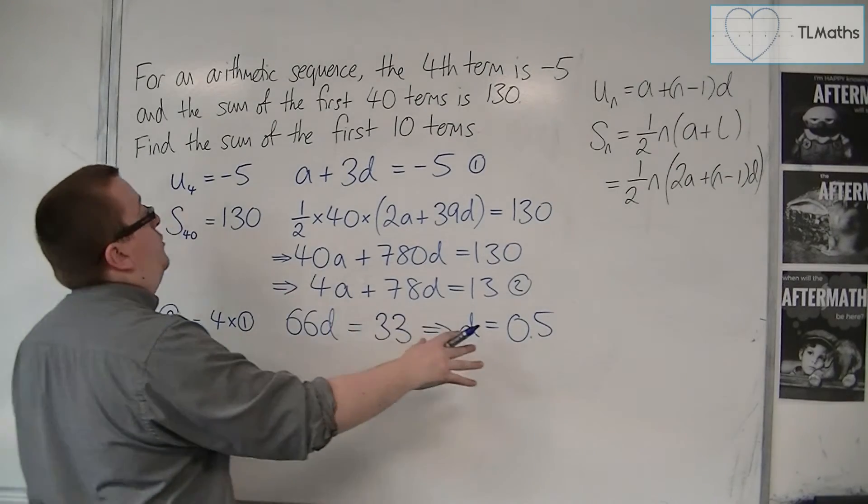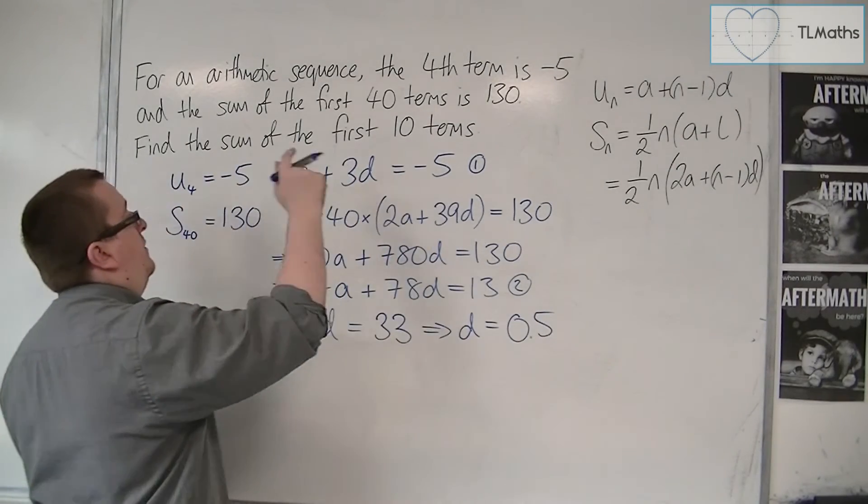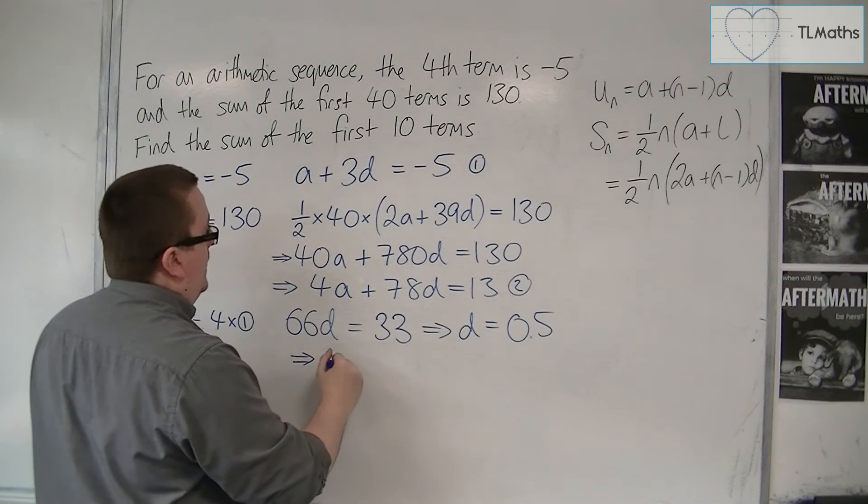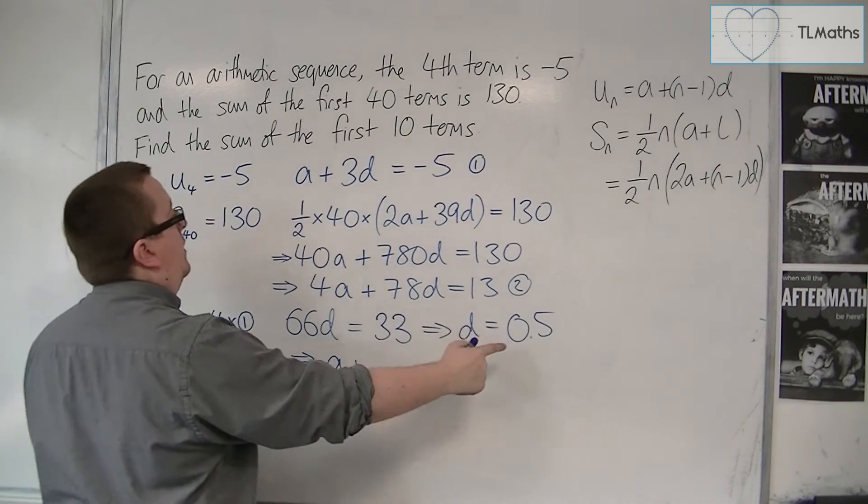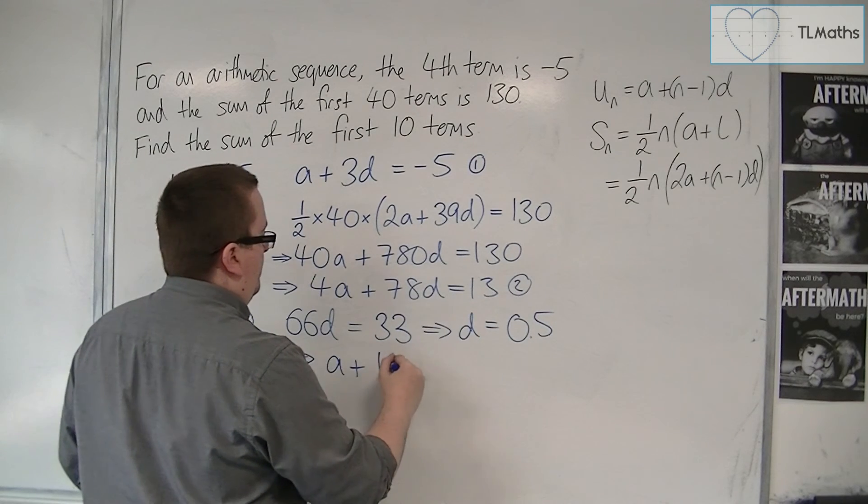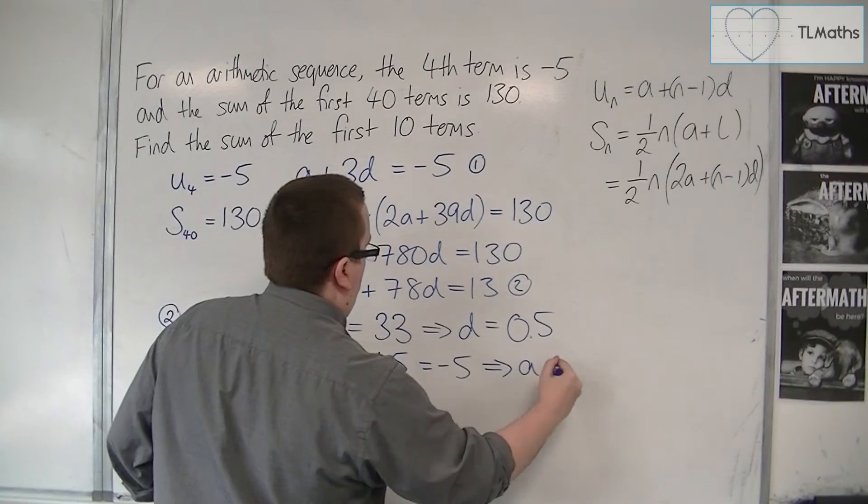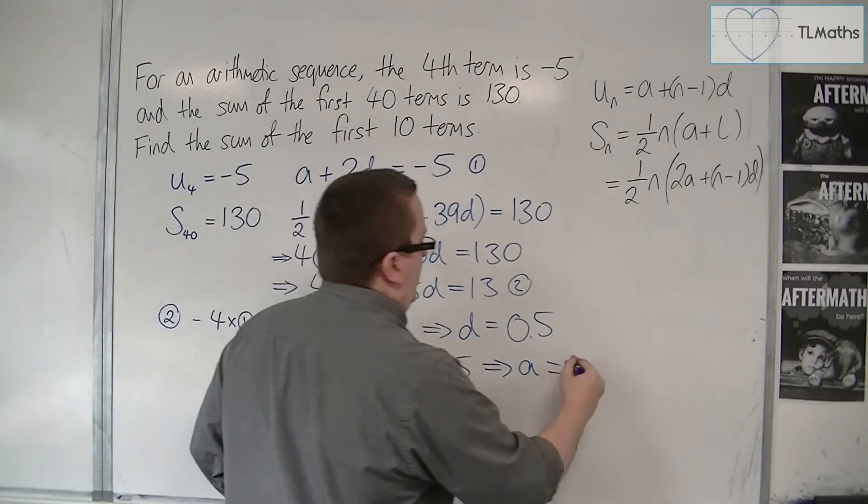So if d is 0.5, I can substitute that into equation number 1, and get a plus 3 lots of 0.5 is 1.5, is equal to minus 5, and so a is minus 6.5.